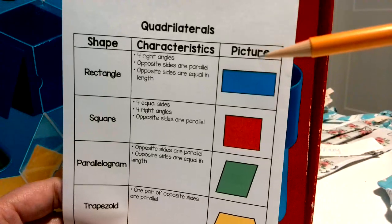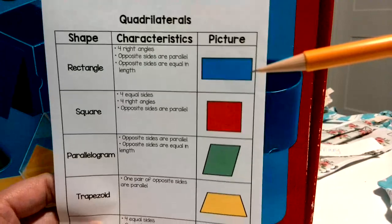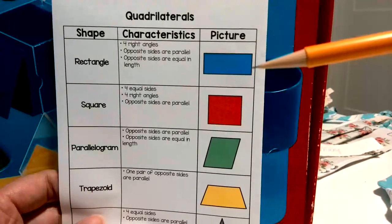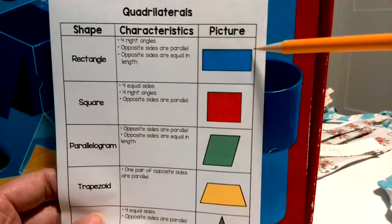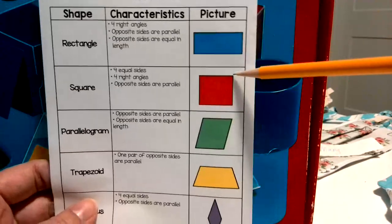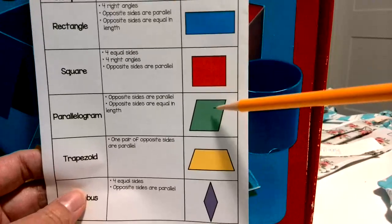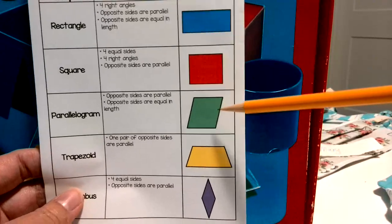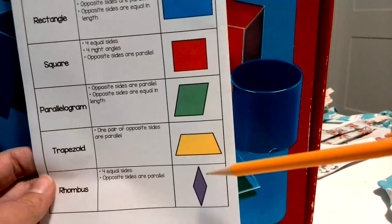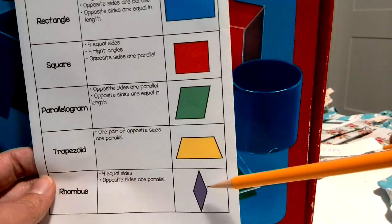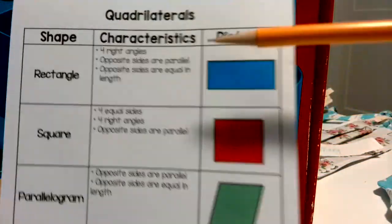On this paper you have five examples of quadrilaterals: we have a rectangle, a square, a parallelogram, a trapezoid, and a rhombus.